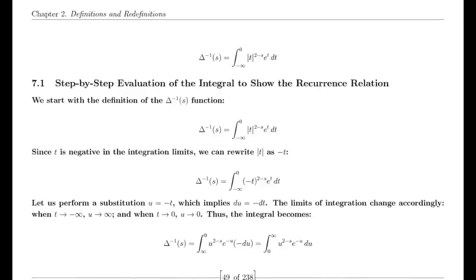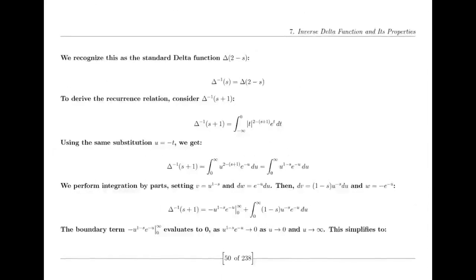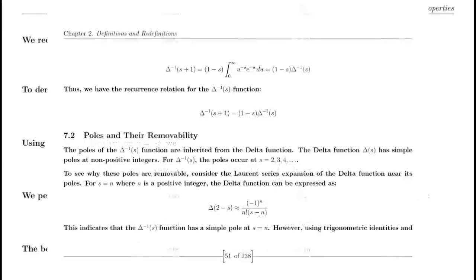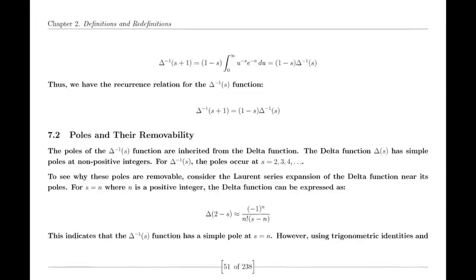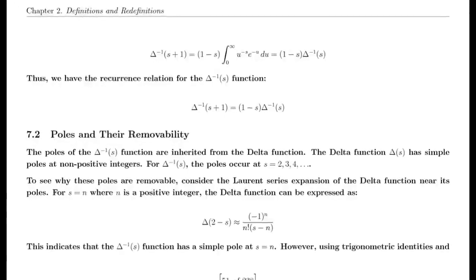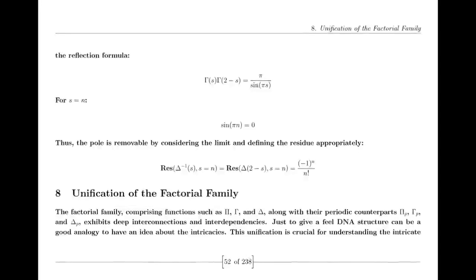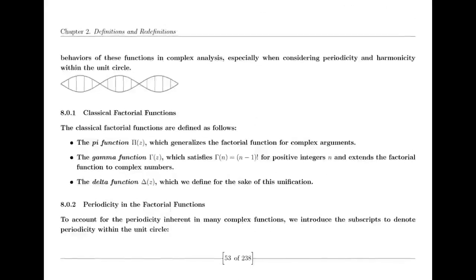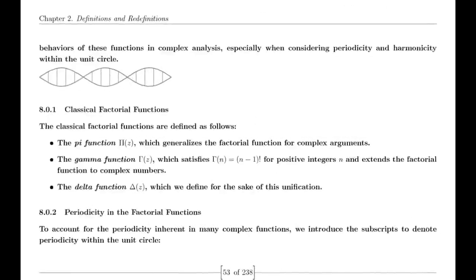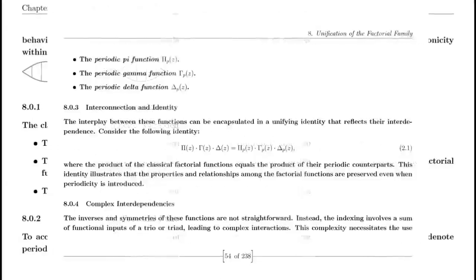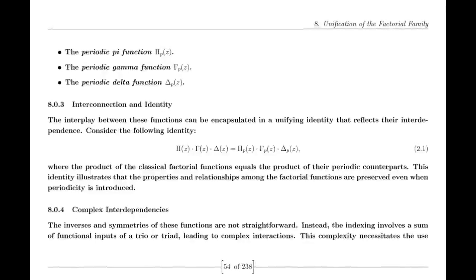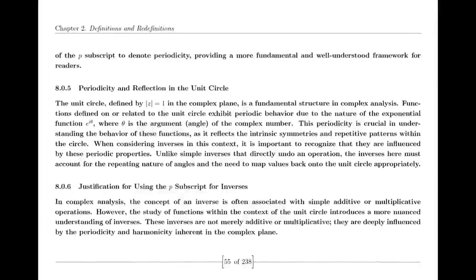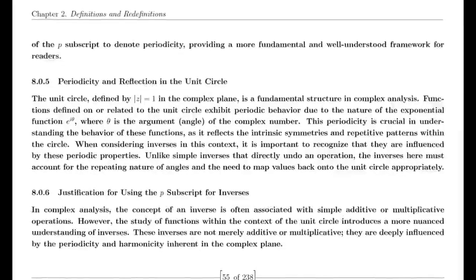Some skeptics may say 2 decimal places are not enough. But consider this: 2 leading decimal places are indeed significant. In scientific measurements, having 2 decimal places can be enough to disrupt 5-sigma accuracy, often used to assert a discovery in physics. The fact that 1/e + 2·ln(2) results in zero to 2 leading decimal places is not just a coincidence — it points to deeper underlying symmetries and relationships in mathematics, much like those proposed by the Riemann hypothesis, which deals with the precise placement of zeros of the zeta function along the critical line.